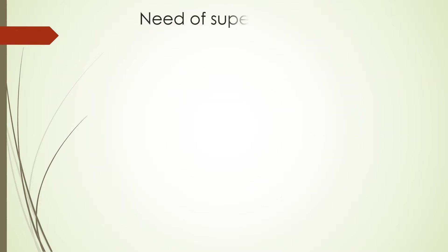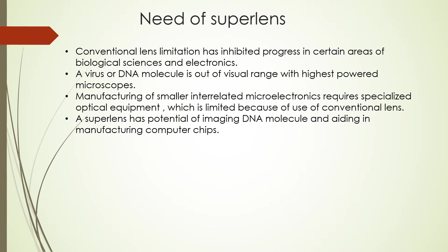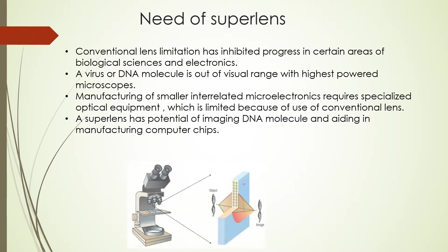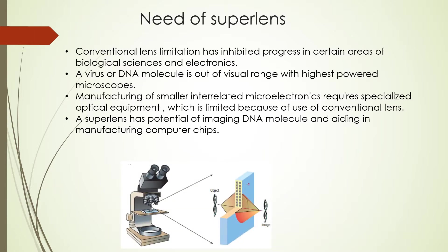So why is there a need for a superlens? Because of Abbe's diffraction limit, the lenses of microscopes and other optical equipment are incapable of capturing some fine details of objects. A superlens intends to go beyond the diffraction limit, providing ultra sharp images. Conventional lenses have inhibited progress in areas like biology and microelectronics, because a virus or DNA molecule is out of range of high powered microscopes. Also, manufacturing of smaller computer chips requires optical equipment which is also limited by conventional lenses. Hence, there is a strong need for the superlens to progress.